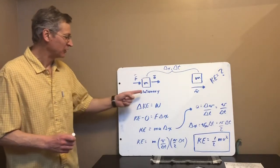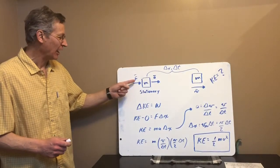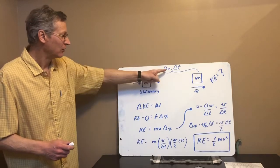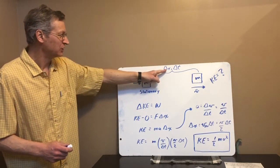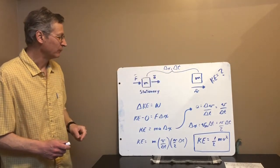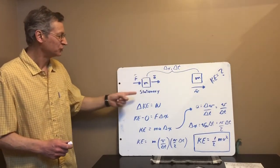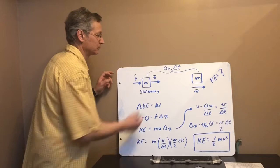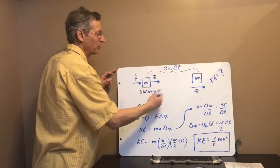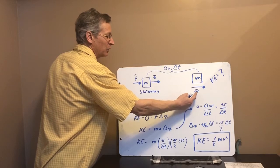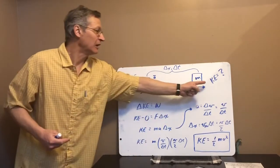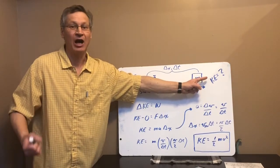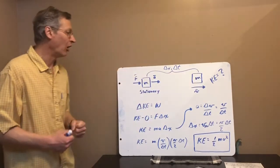How do you calculate kinetic energy? Suppose we have a mass that is initially stationary — not moving — and we apply a force to that mass over some distance or displacement for some length of time. Obviously, if you apply force to the mass, the mass is going to accelerate. After you've been pushing on it through some distance, that mass is going to have some velocity. It's going to have kinetic energy — it's moving, therefore it has kinetic energy. The question is: how much kinetic energy does it have?